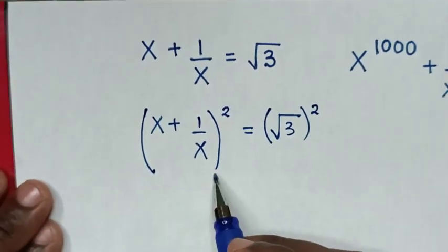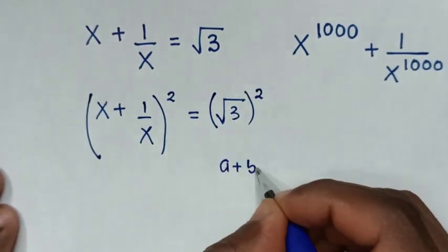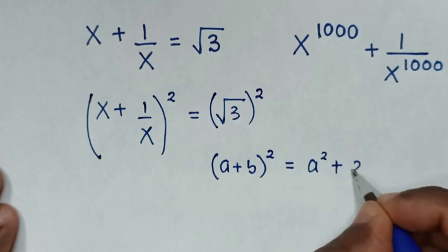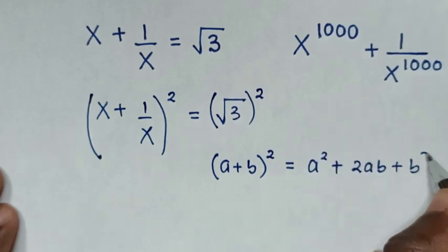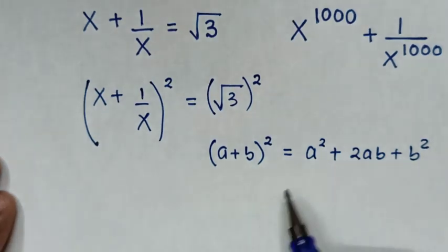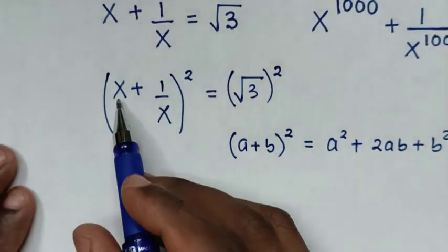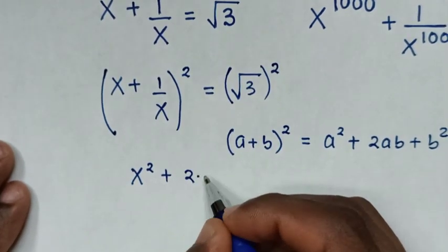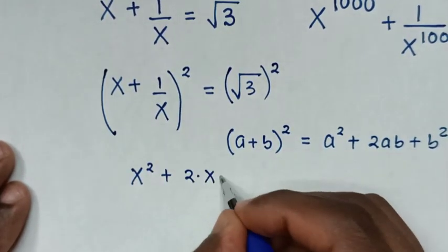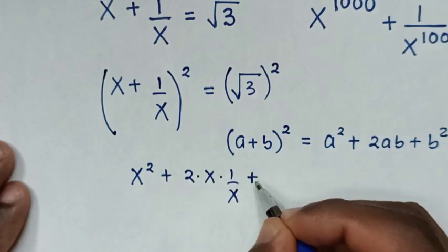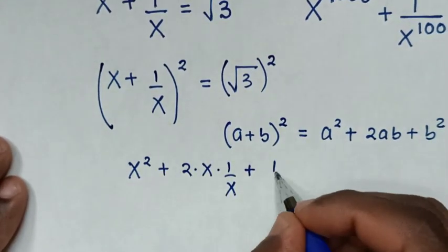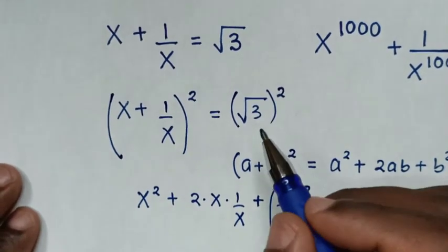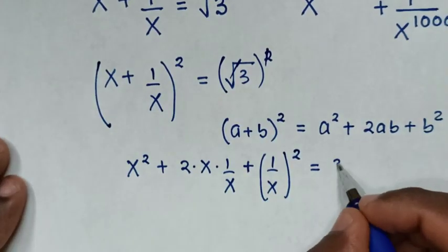Then, from the left side, this is in the form of (a plus b) squared, which is equal to a squared plus 2ab plus b squared. So our equation will be: a squared is x squared, plus 2ab which is 2 times x times 1 over x, plus b squared which is (1 over x) squared, equal to 3, since the square root cancels with the square.